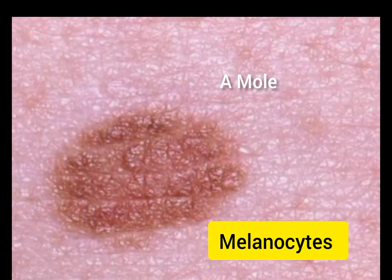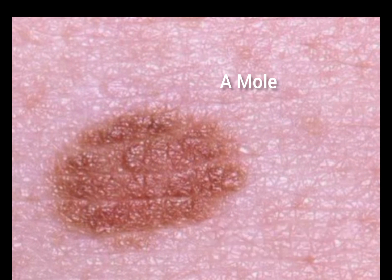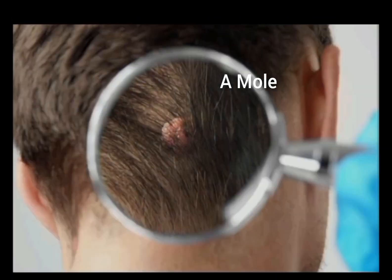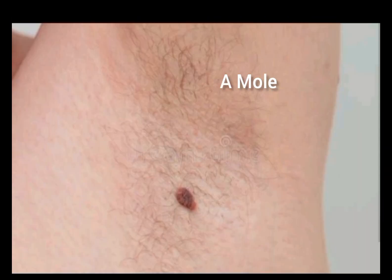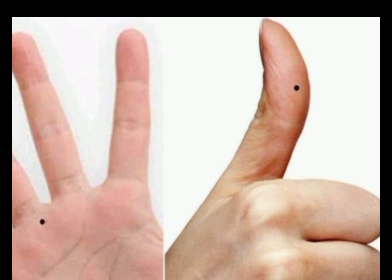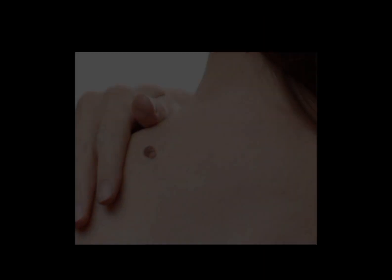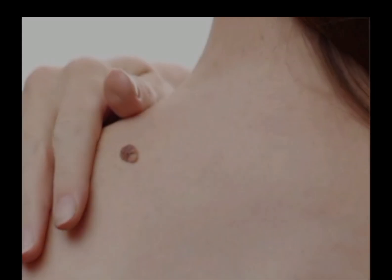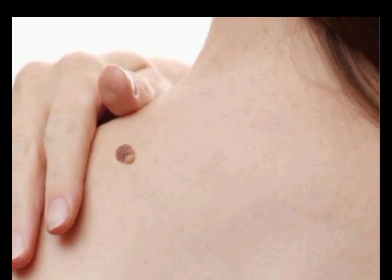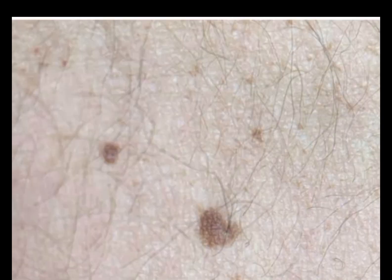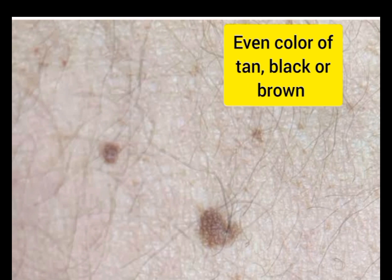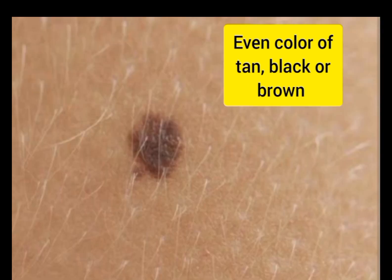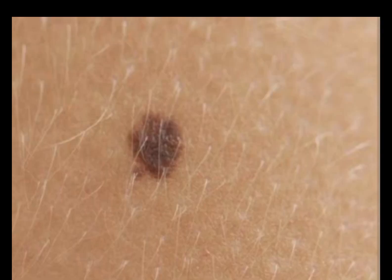Moles can grow anywhere on the body including the scalp, armpits, as well as between the fingers and toes. A normal mole is usually round or oval, and smaller than 5 mm wide, and has a smooth surface with distinct edges and usually has an even color of tan, black, or brown, depending on your skin type.